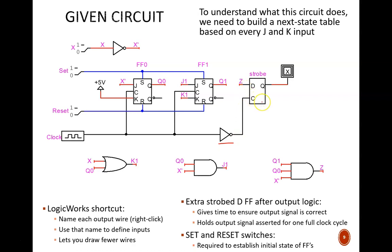Secondly, it holds the output signal constant for one full clock cycle. This is a Mealy machine, which means the input signal feeds directly to the output logic. You can see that in the bottom right. The output logic is just this AND gate, which has X prime as one of its inputs. If that switch for X were fluctuating rapidly, then this output Z could potentially fluctuate as well. This D flip-flop doesn't alter the logic of the output. It just makes sure it holds steady.